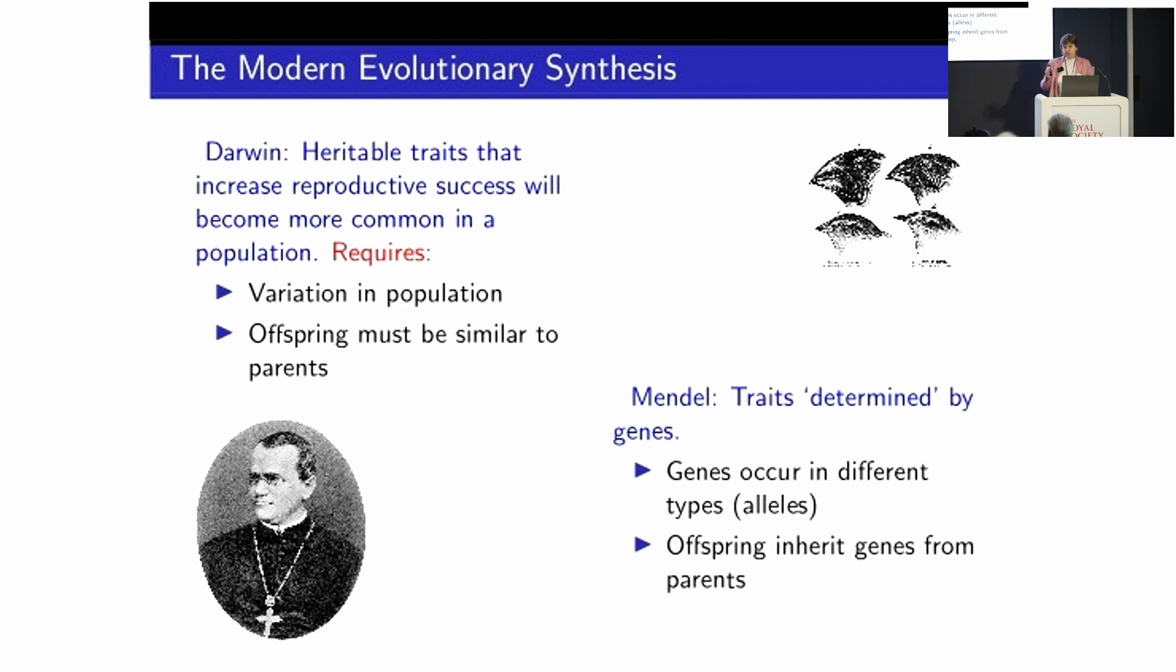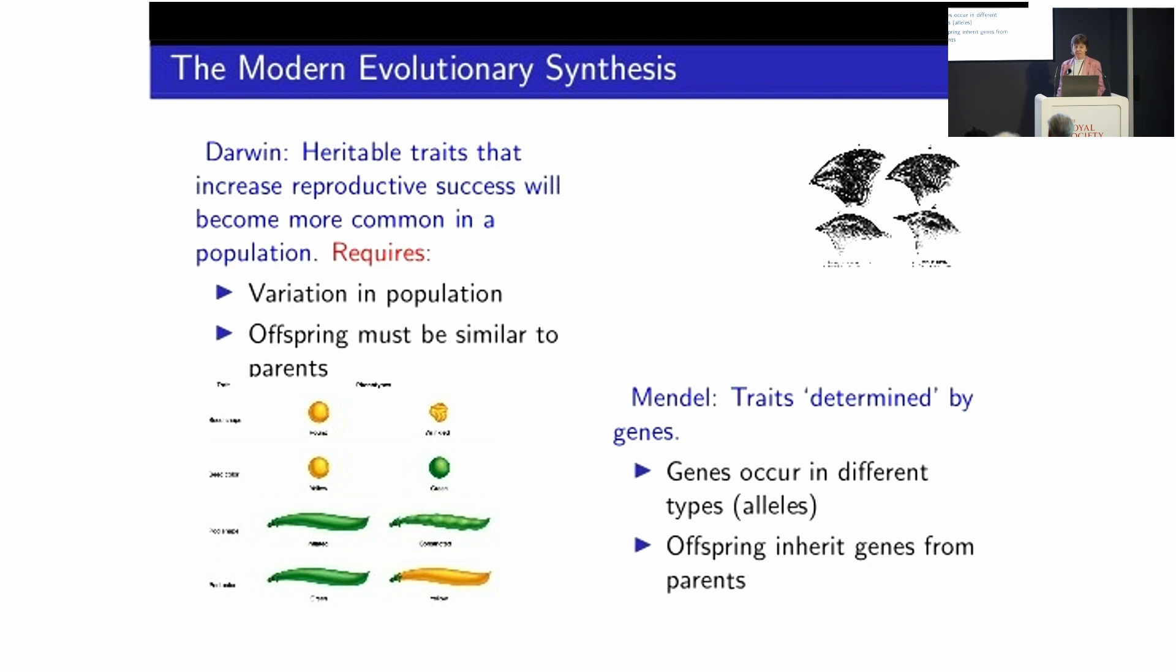So put like that, it seems surprising that it took 50 years before people realised that these two theories could be melded into a single theory. But perhaps part of the reason was that Darwin concentrated on natural selection, achieving big changes through the accumulation of lots of small changes. Whereas Mendel was very interested in discrete changes. Mendel was interested in green pea versus yellow pea, wrinkled versus smooth and so on.